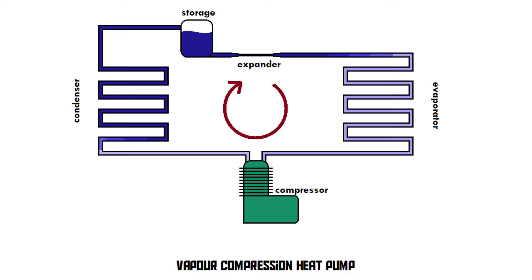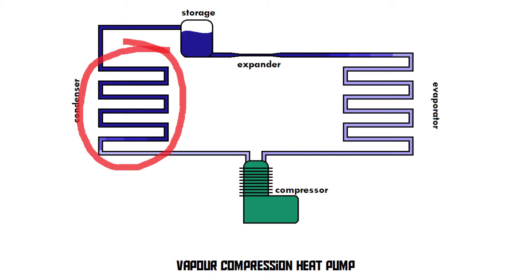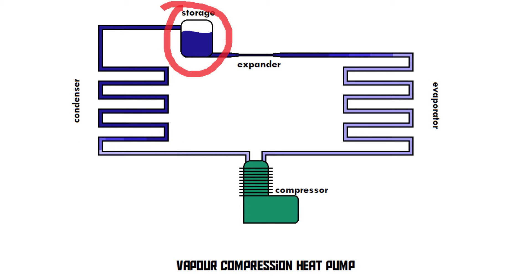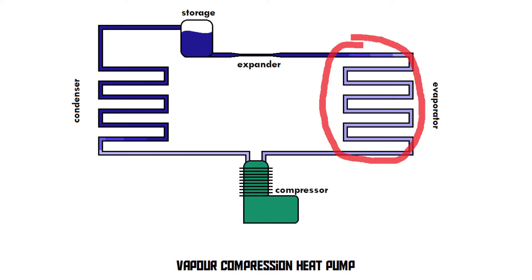Let's take a look at a schematic drawing of a vapour compression system. As you can see, it's a closed loop that consists of five main parts: the compressor, the condenser, a storage tank, an expander or throttling valve, and finally the evaporator. This loop is filled with a special substance called a refrigerant.